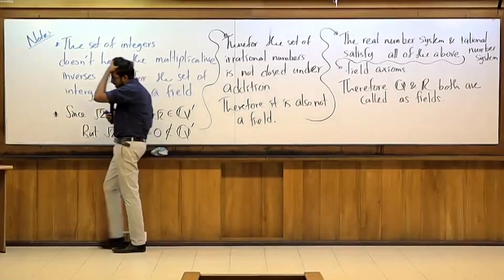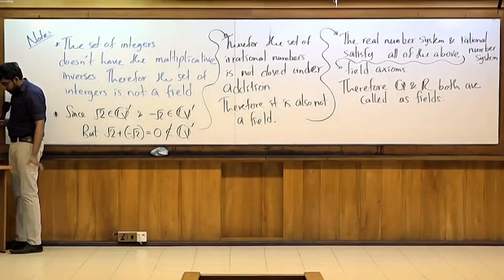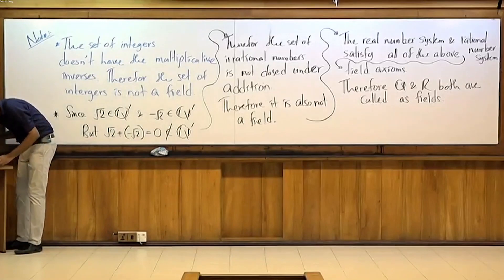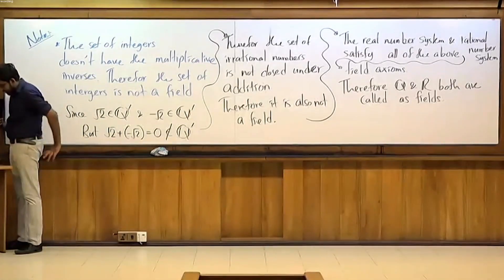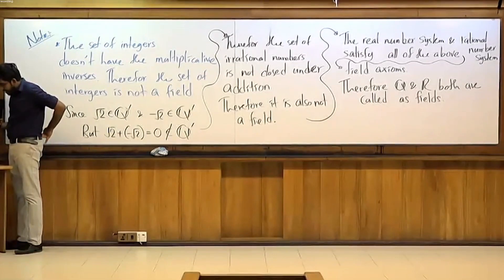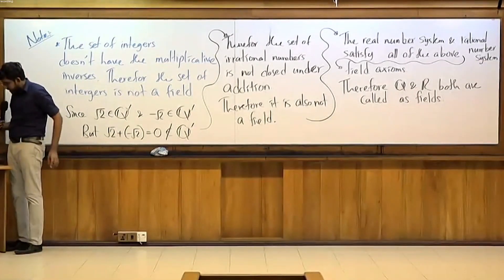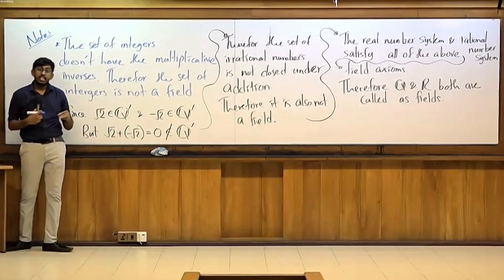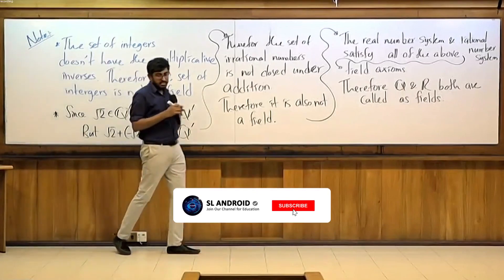One axiom: for all A, B, C — if A less than B and B less than C, imply A less than C.